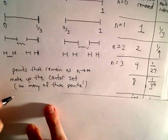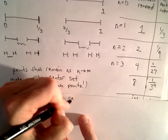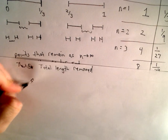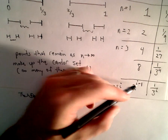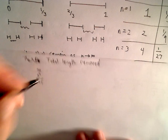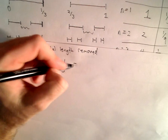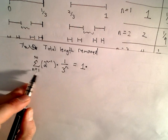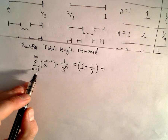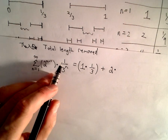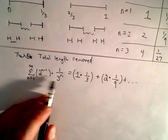To find the total length removed we just add them all up, so I'll write this in summation notation starting at n equals one. The formula is the sum of two to the n minus one times one over three to the n. Plugging in n equals one gives two to the zero which is one, times one-third — one interval of length one-third, which matches. Plugging in n equals two gives two to the first times one over nine — two intervals of length one-ninth. The formula checks out.